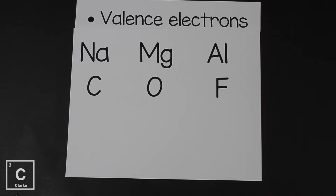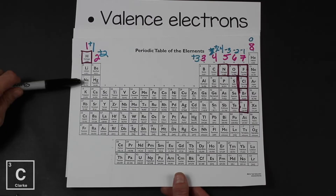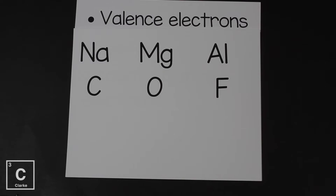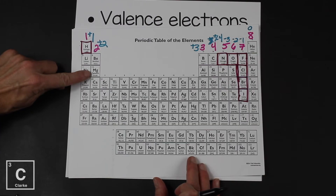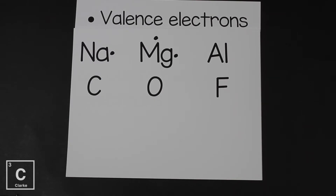To draw Lewis dot structures, we've got to look at the valence electrons. If we look at sodium, Na, it's in group one, so it has one valence electron. So to draw its Lewis dot structure, we would just put one dot on sodium. Magnesium is in group two, it's going to have two valence electrons. Here's its Lewis dot structure.